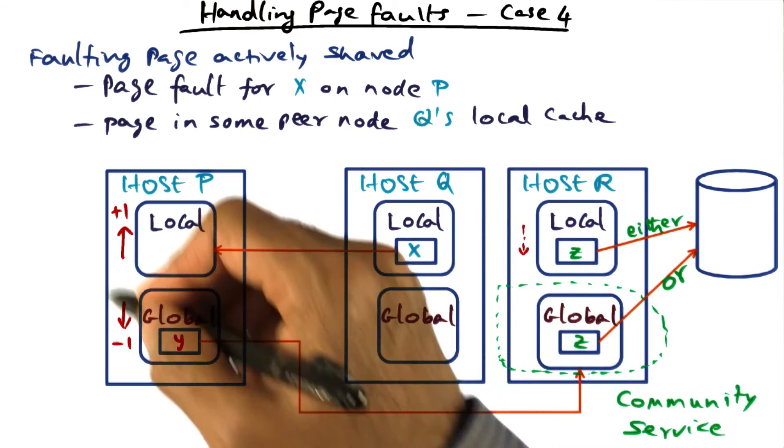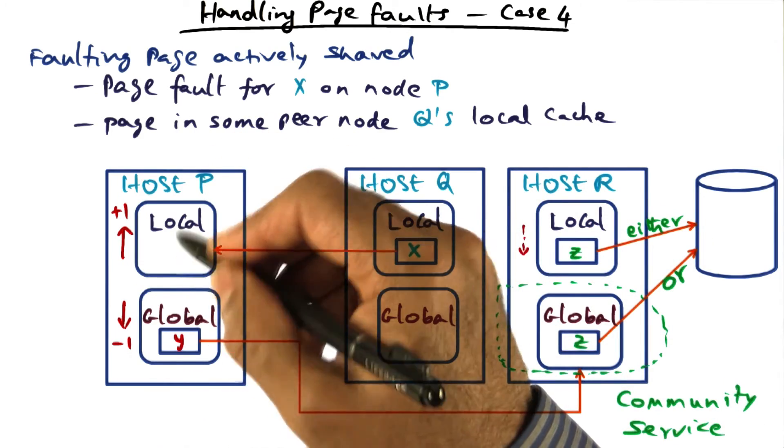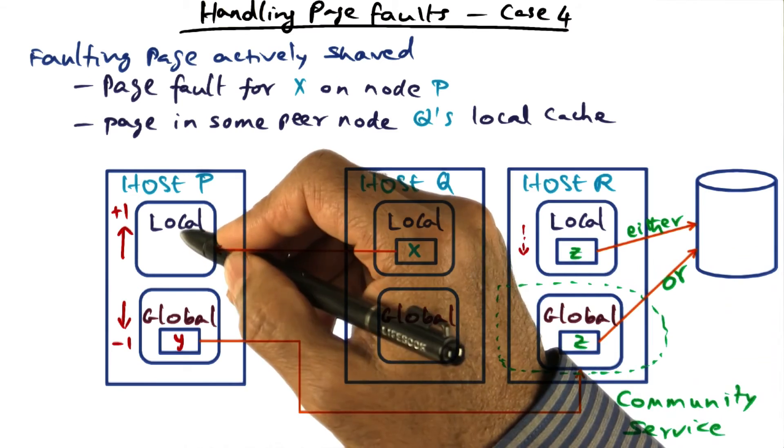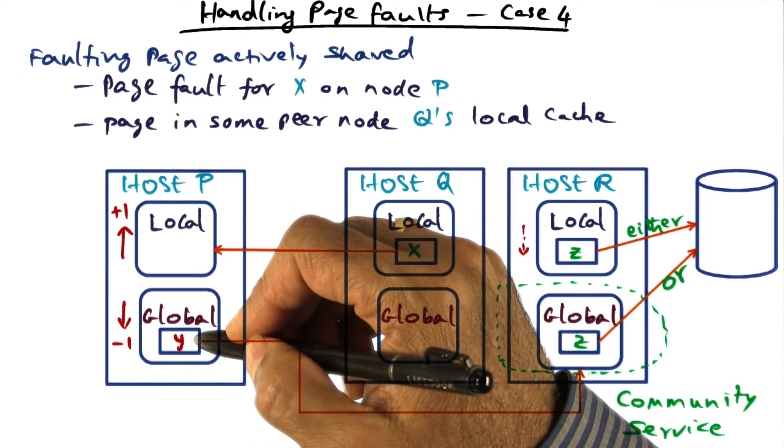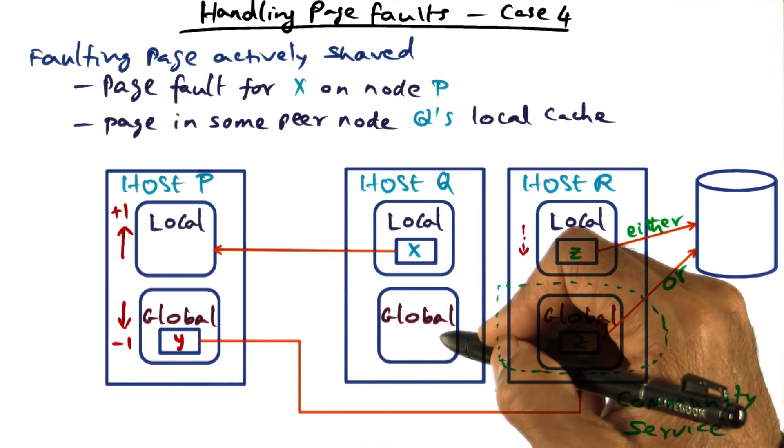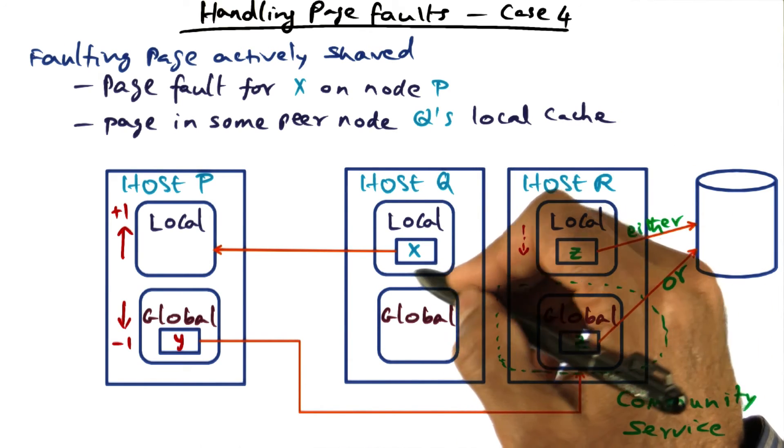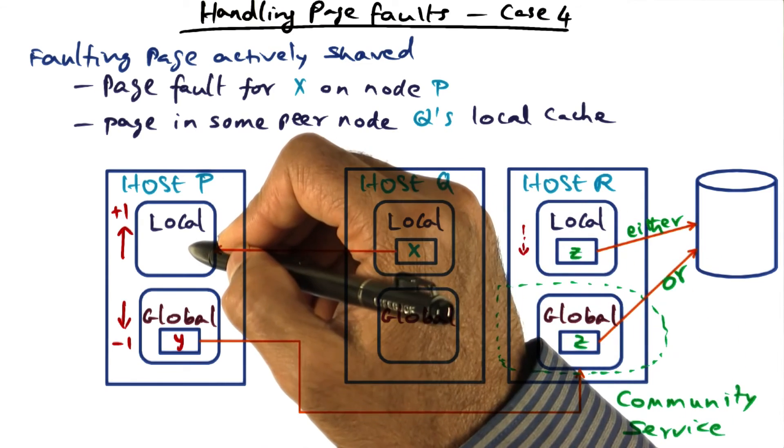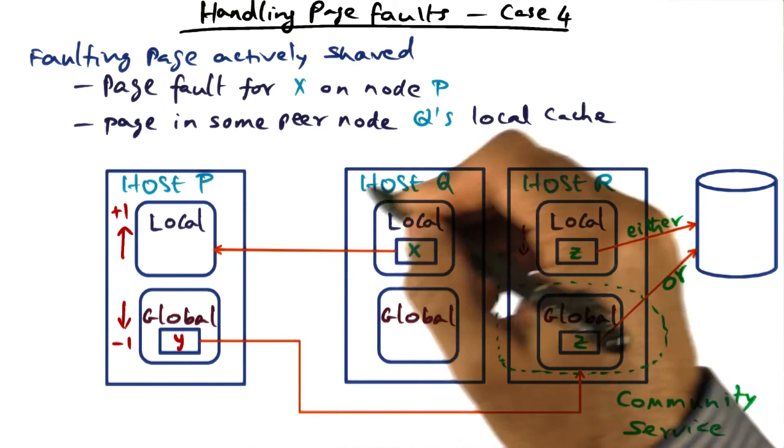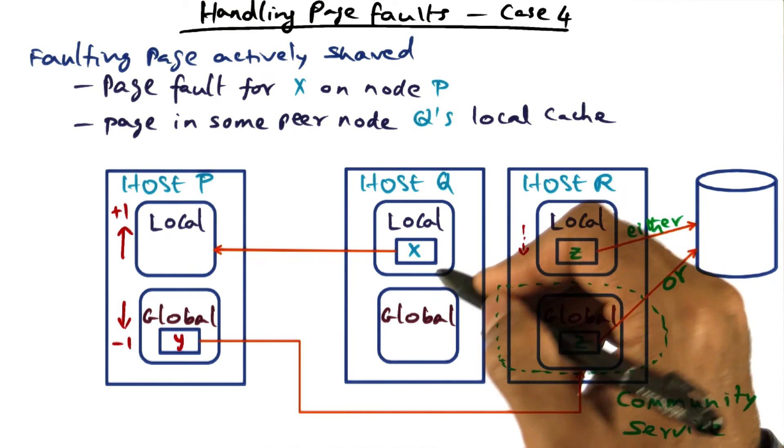So we can talk about the relative split between local and global in this particular case. Well, in this case, host P, local goes up by one, global goes down by one. In host Q, nothing changes because there's an actively shared page, which means we leave the copy here, just give a copy over to P. So the balance between local and global doesn't change.